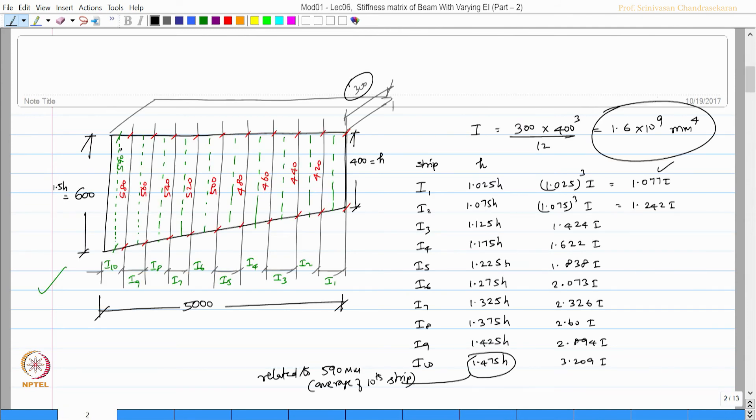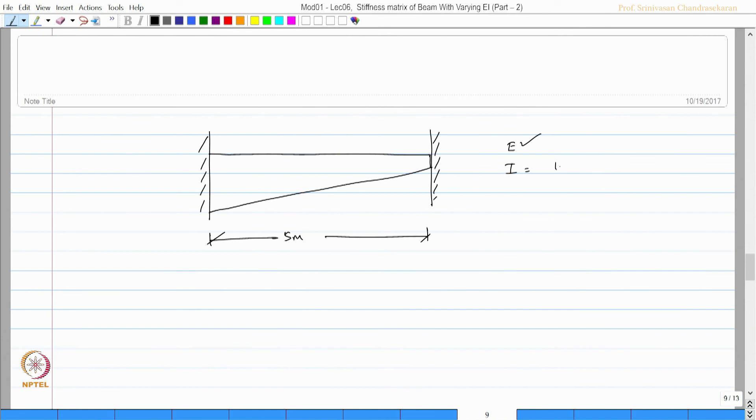Now friends, let us say I have a beam which is fixed at both the ends and has got a varying cross section. So the length of the beam is 5 meters. E is the material property and I is already known to us. You see here, I is known to me: 1.6 times 10 to the power 9 mm to the power 4.